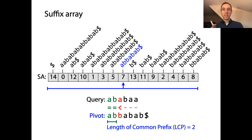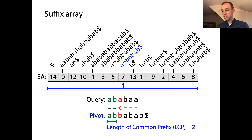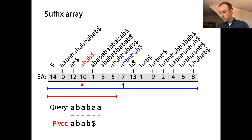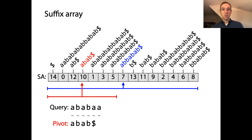We'll use this abbreviation again and again, so I'm defining it here: LCP means length of common prefix. In this example, the query string and the blue pivot have an LCP of 2. The fact that the query was less than the pivot means that when we recurse, we should recurse to the left. So we recurse to the left, pick our new pivot in the middle of the left half, and compare the query against the red pivot.